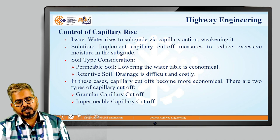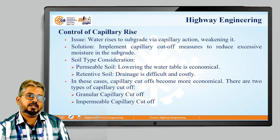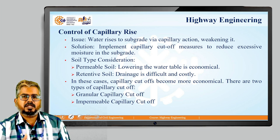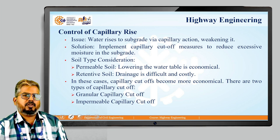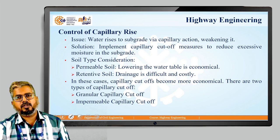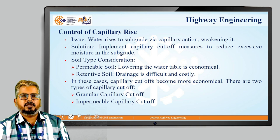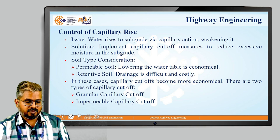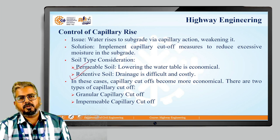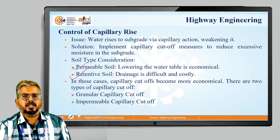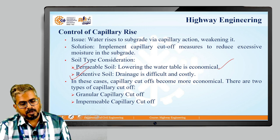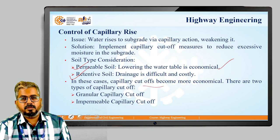Then we have the control of capillary rise. The issue is that water rises to the subgrade level due to capillary action, weakening it and compromising the bearing strength of the subgrade. The solution is to implement capillary cutoff measures to reduce excessive moisture in the subgrade. For permeable soil, lowering the water table is economical, while for retentive soil, it is very difficult and costly. In these cases, capillary cutoffs become very important.